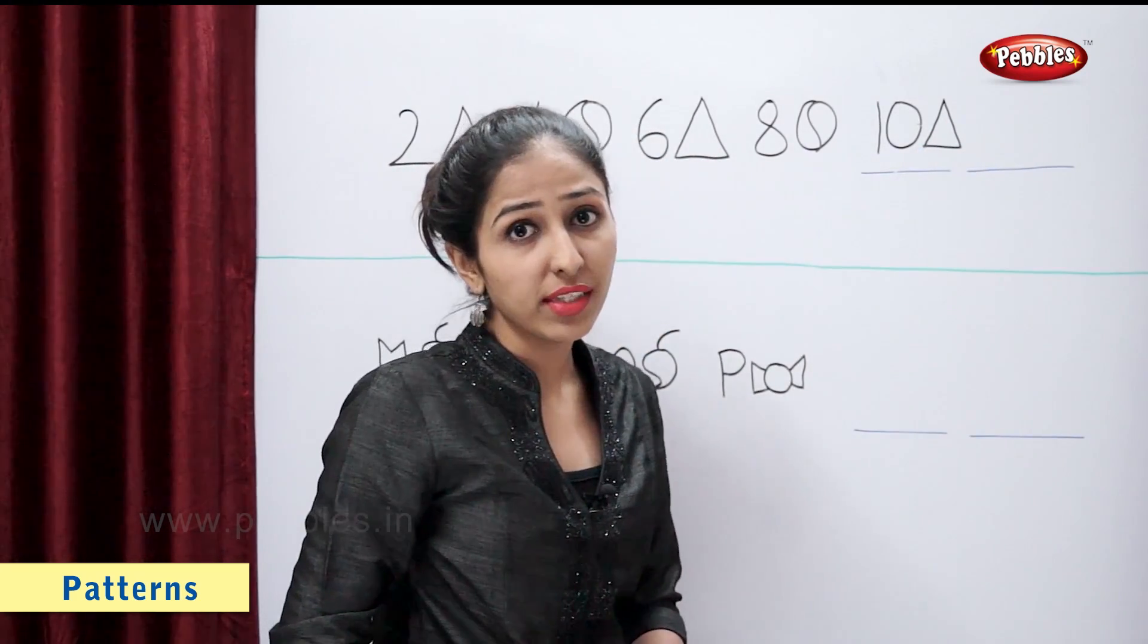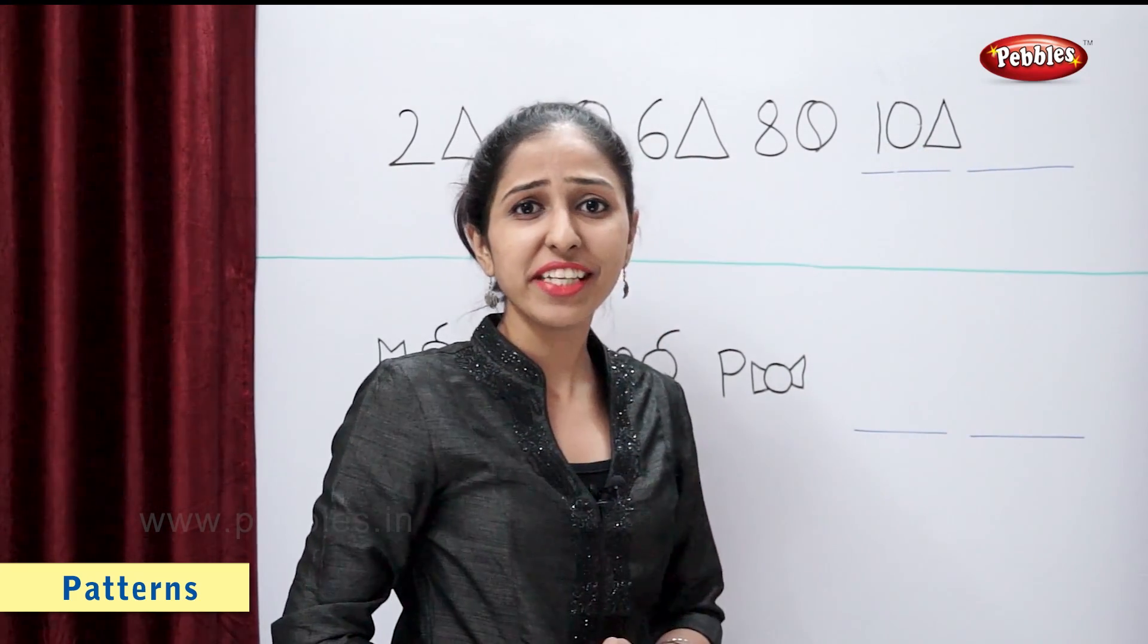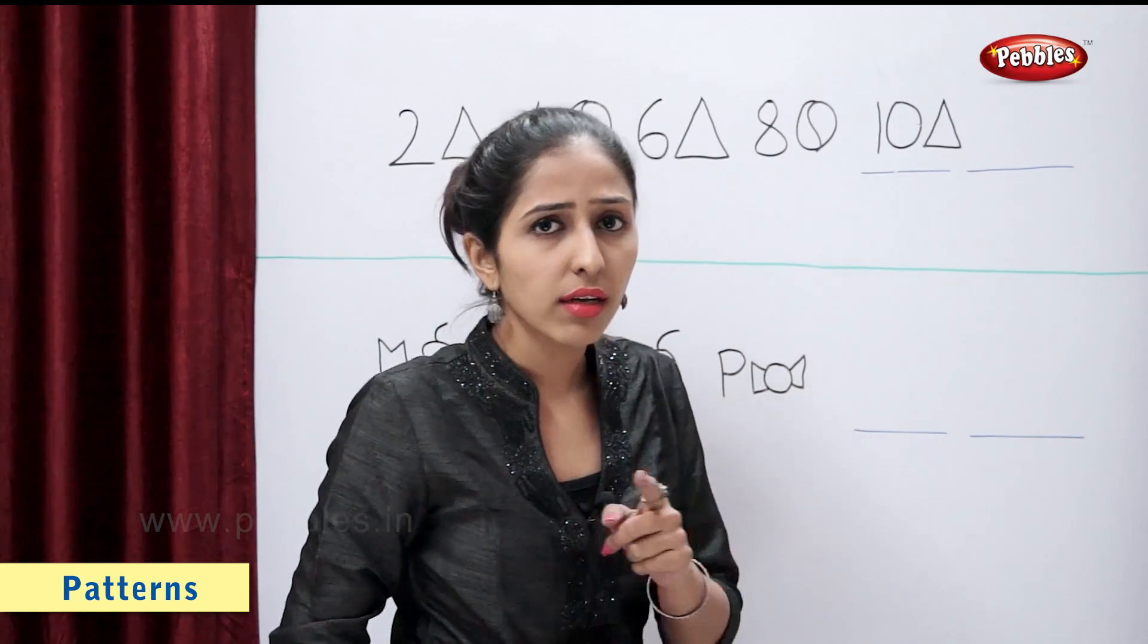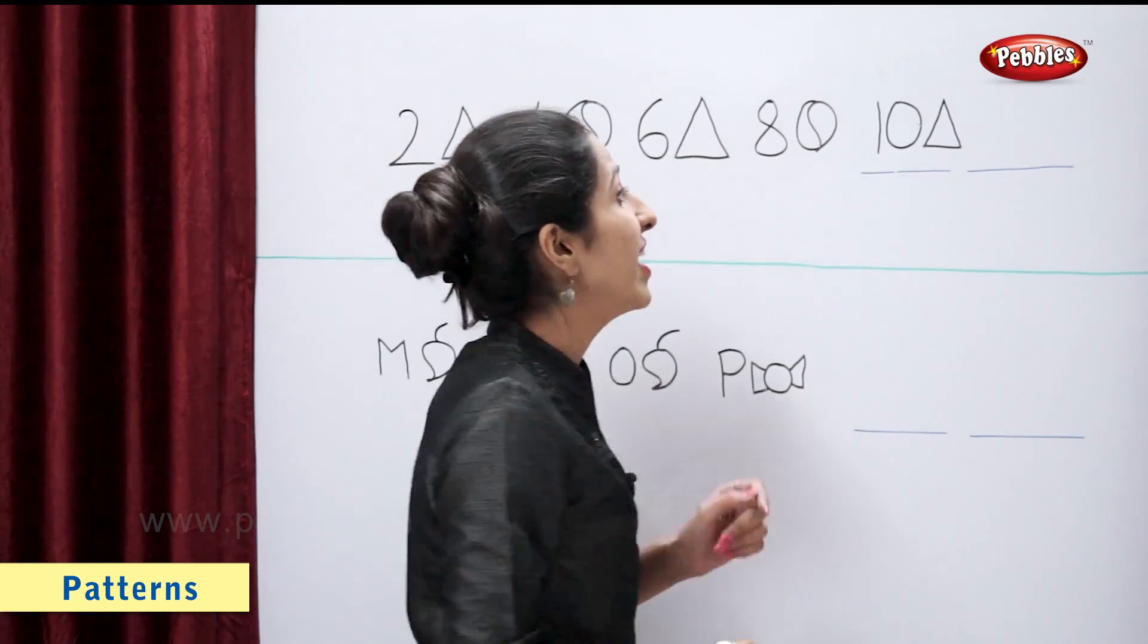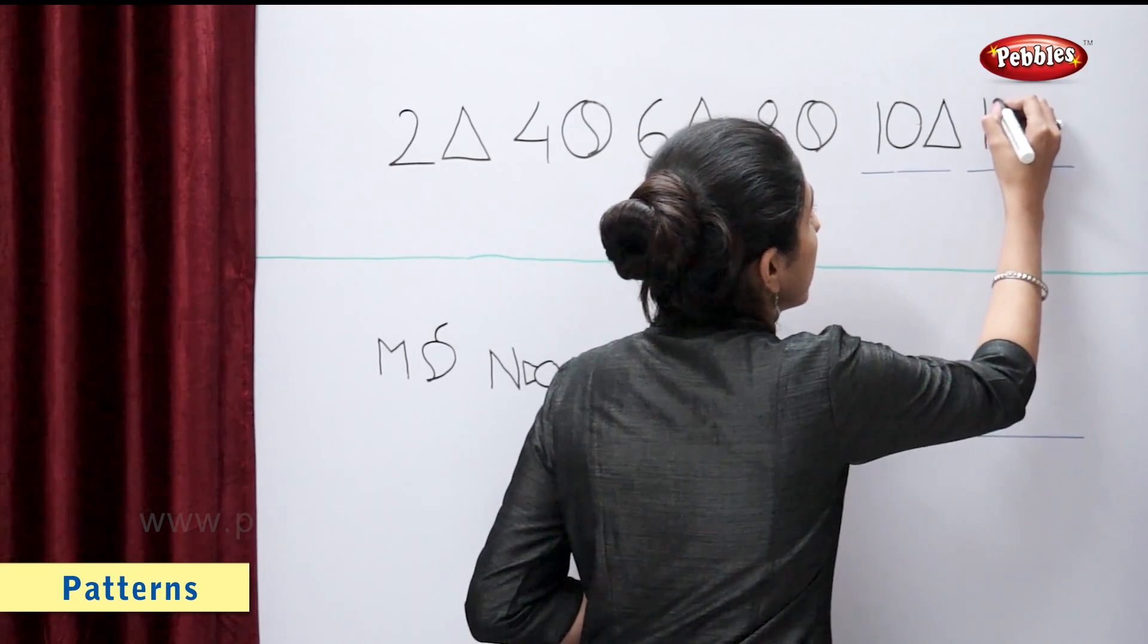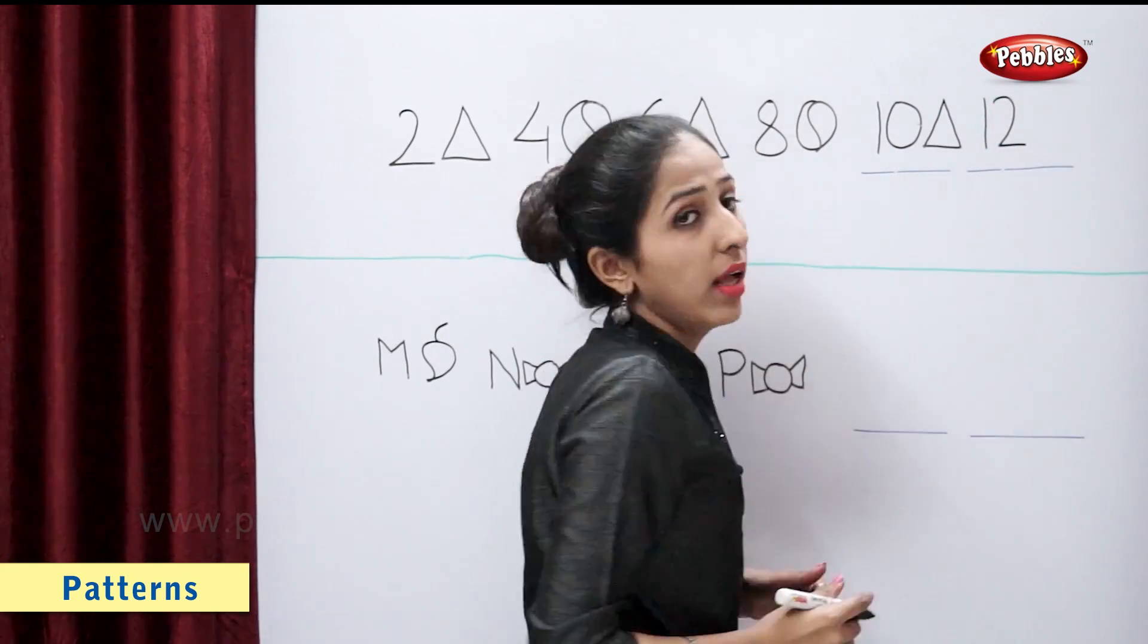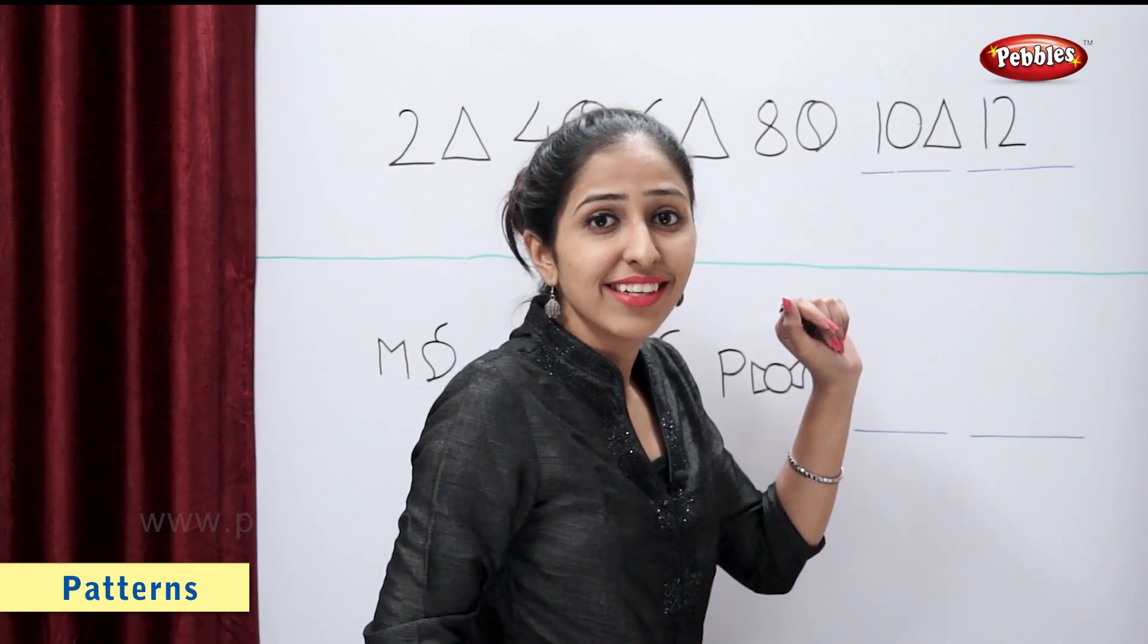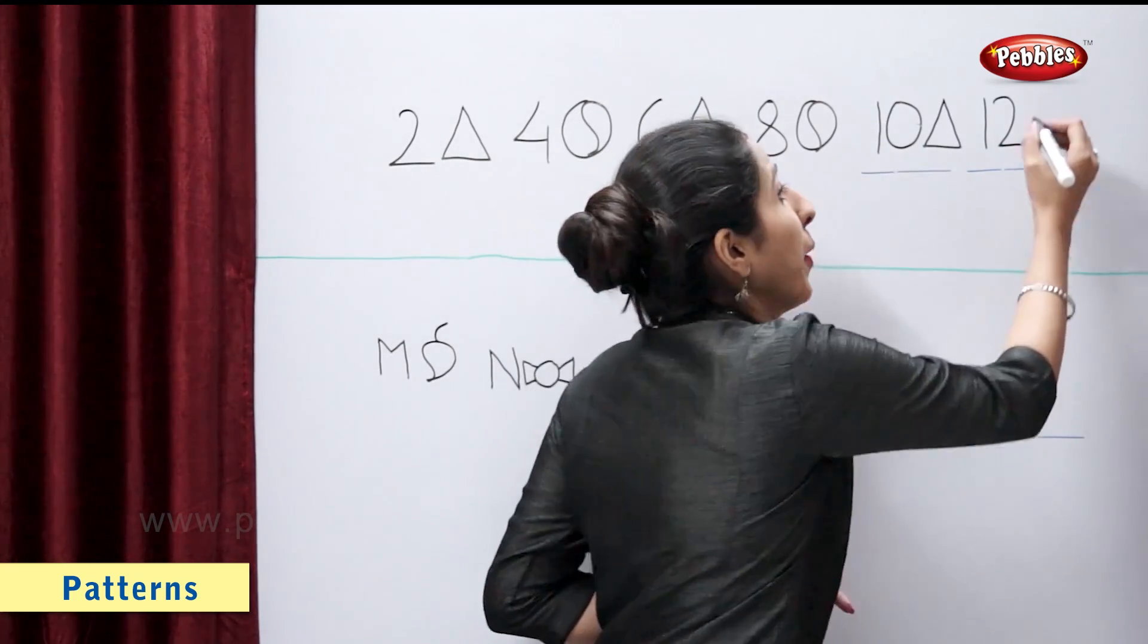Now tell me students, which is the next number in the series? 10 plus 2 is 12. And the shape after triangle? Correct, ball.